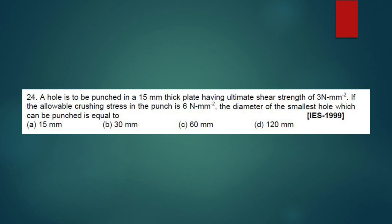In both cases force we will consider. Force for crushing equal to force for shearing, then we will solve this question. Data given: thickness T equal to 15mm, ultimate shear strength 3N per mm square, crushing stress for punch is 6N per mm square.